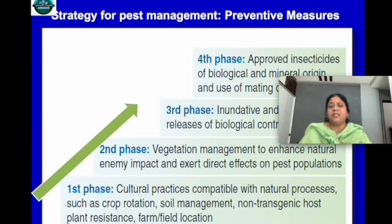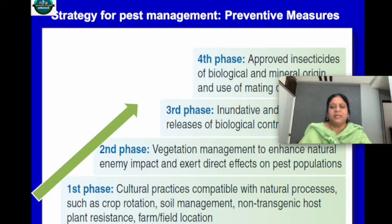There are strategies for pest management. The first phase involves preventive measures using cultural practices such as crop rotation, soil management, and host plant resistance — which should be non-transgenic, conventional host plant resistance — along with farm field maintenance. The second phase is conservation management to enhance natural enemy impact and exert direct effects on pest population, creating favorable conditions for natural enemies.